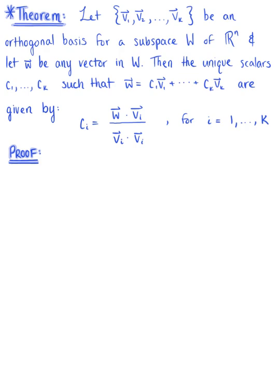Then the unique scalars c sub 1 through c sub k, such that vector w is equal to the linear combination of vectors v sub 1 through v sub k, are given by the formula: c sub i is equal to the ratio of vector w dotted with vector v sub i, divided by the dot product of vector v sub i with itself, for i equal to 1 through k.